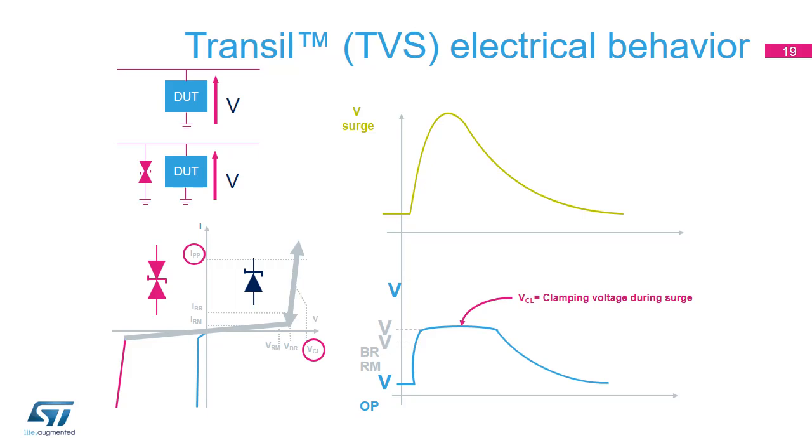The current then stops flowing through the transil, and the voltage can decrease down to its operating value. A transil thus clamps the voltage to a value between its breakdown voltage and its clamping voltage. Protection devices with a transil-like behavior are used to protect against ESD and against low-power EOS.